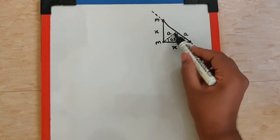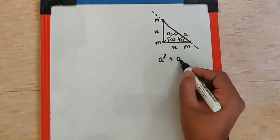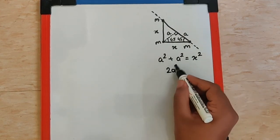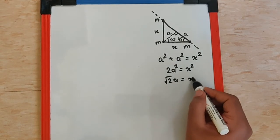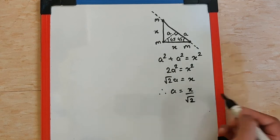Now if I apply Pythagoras theorem for this triangle I can say A square plus A square is equal to X square. That means 2A square, that is root 2A is equal to X and so A is nothing but X by root 2.